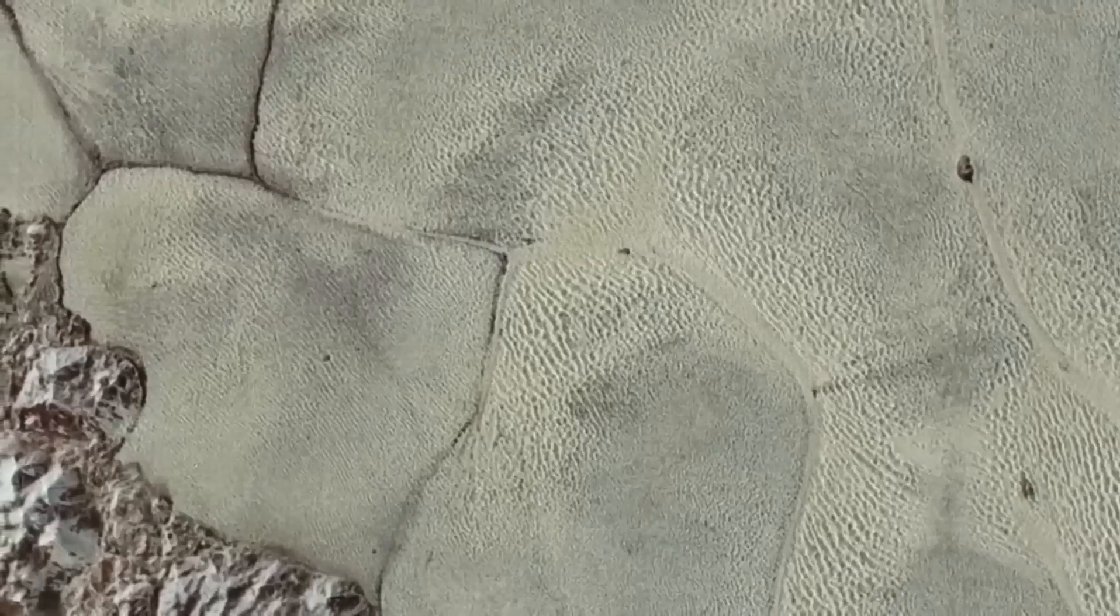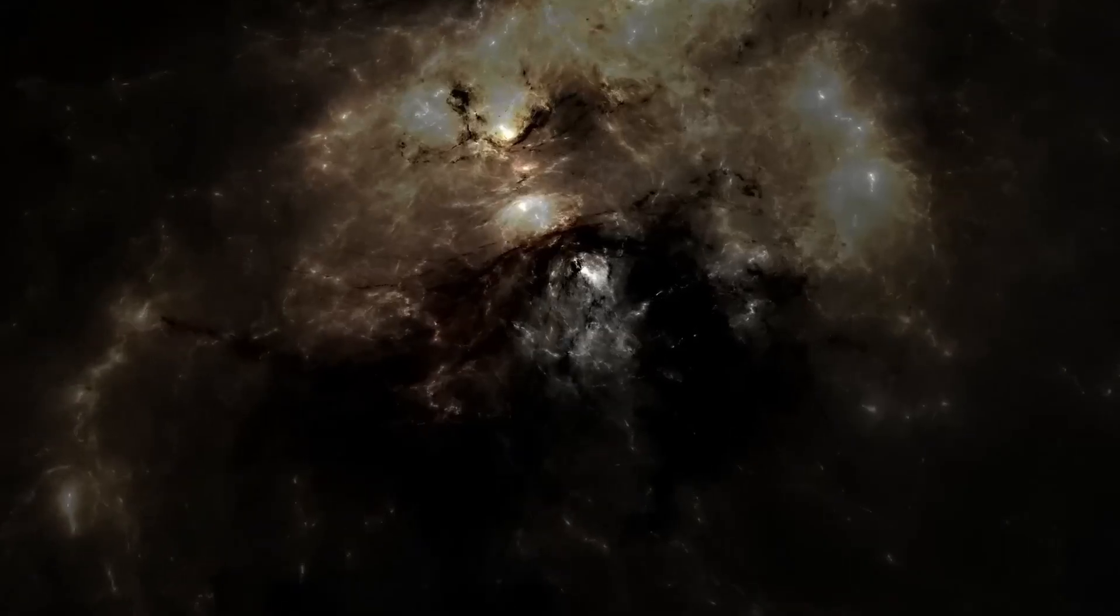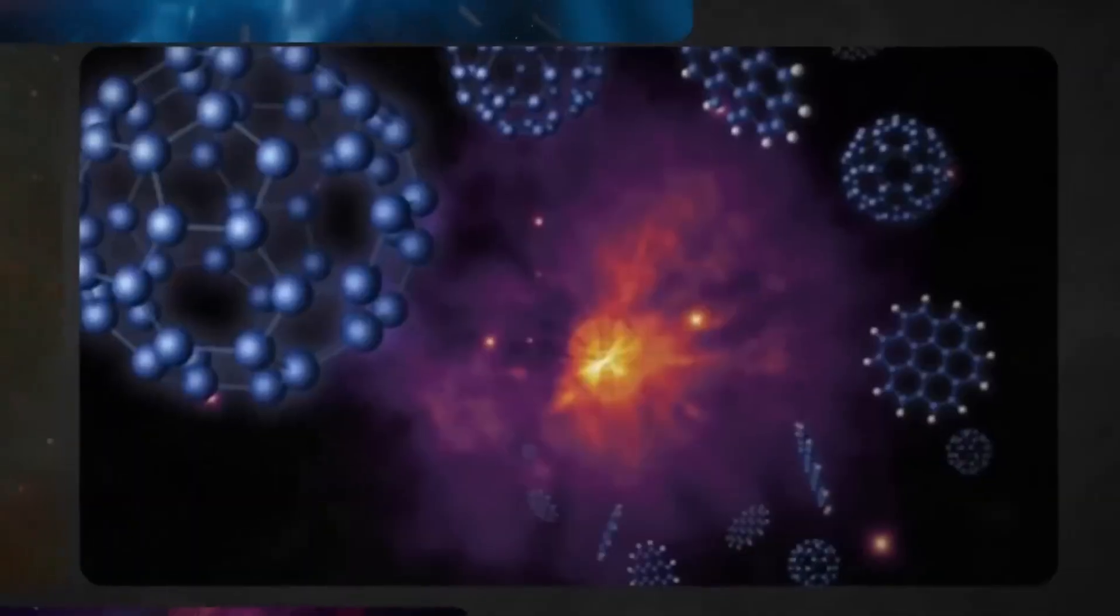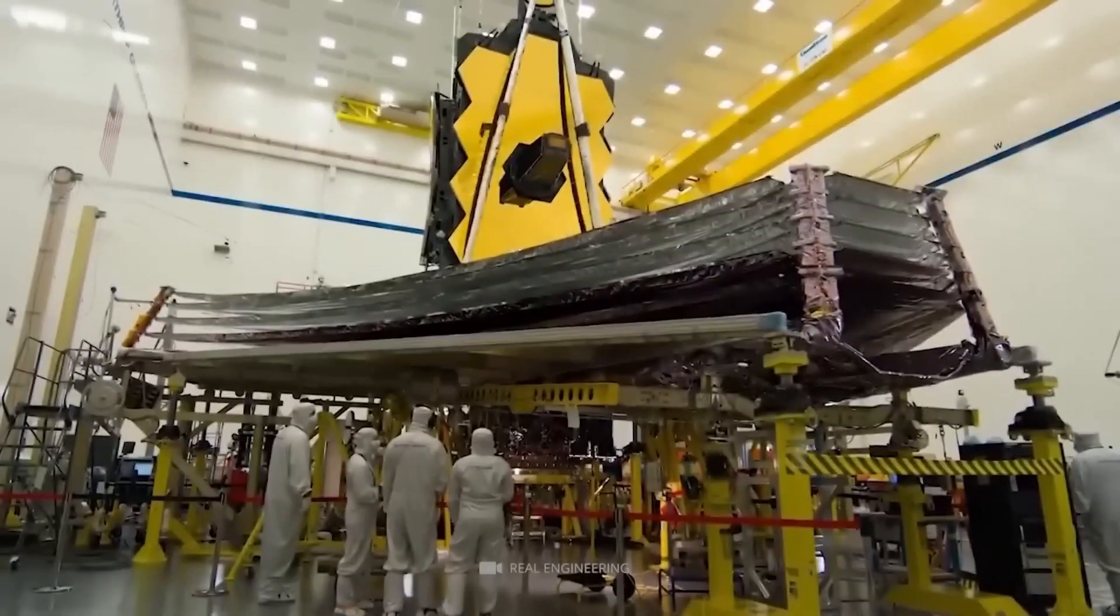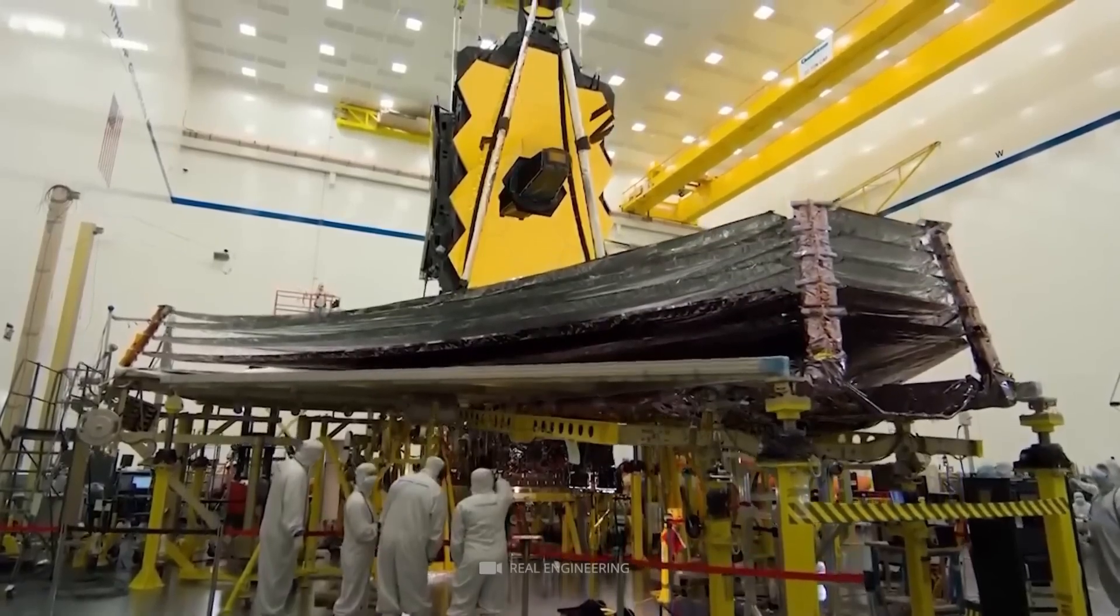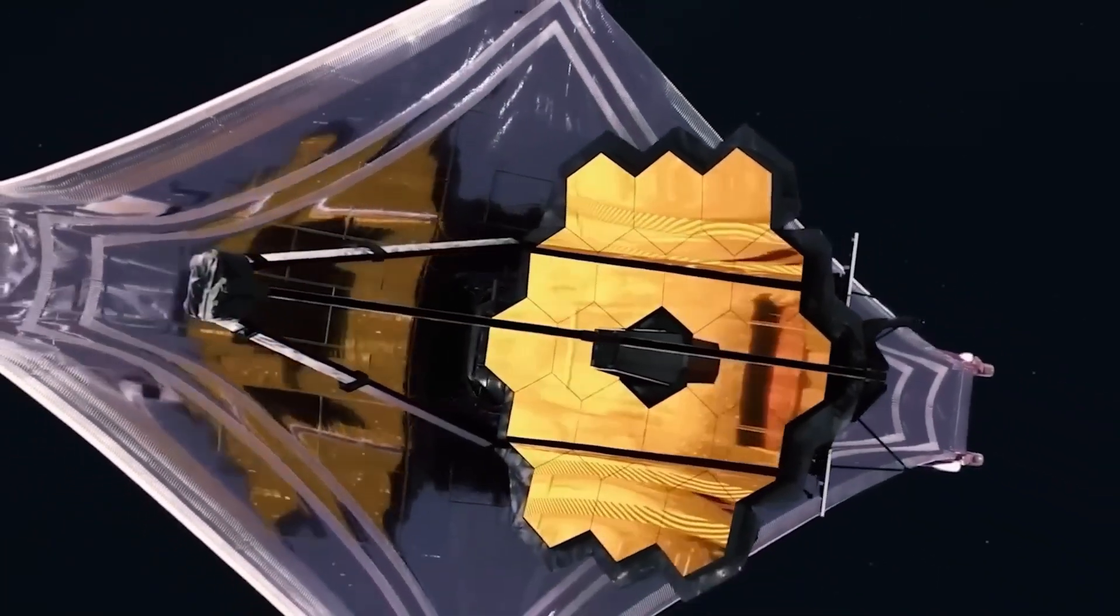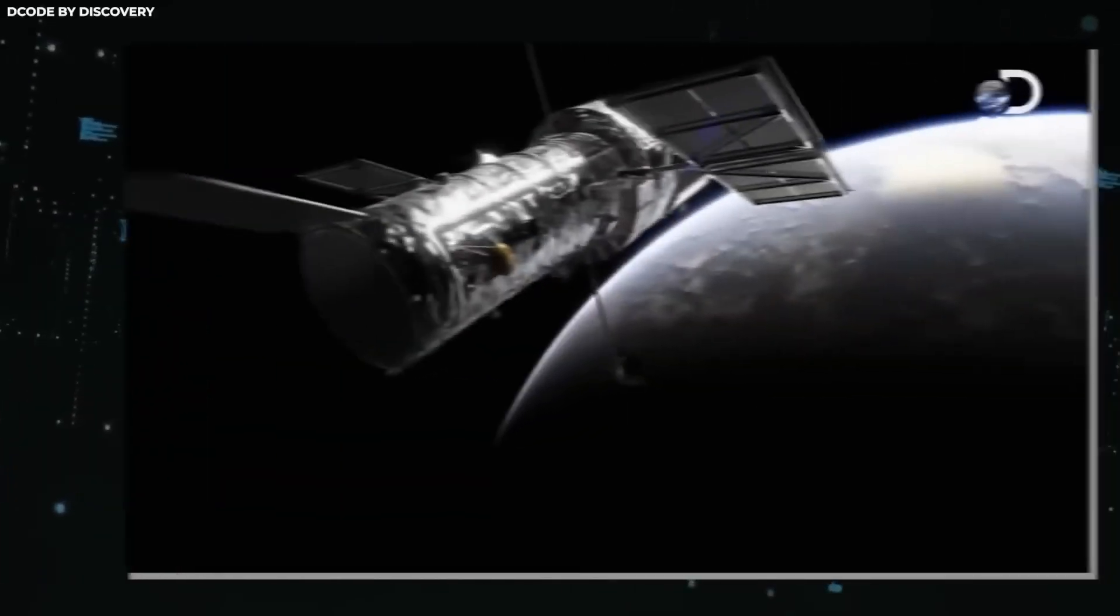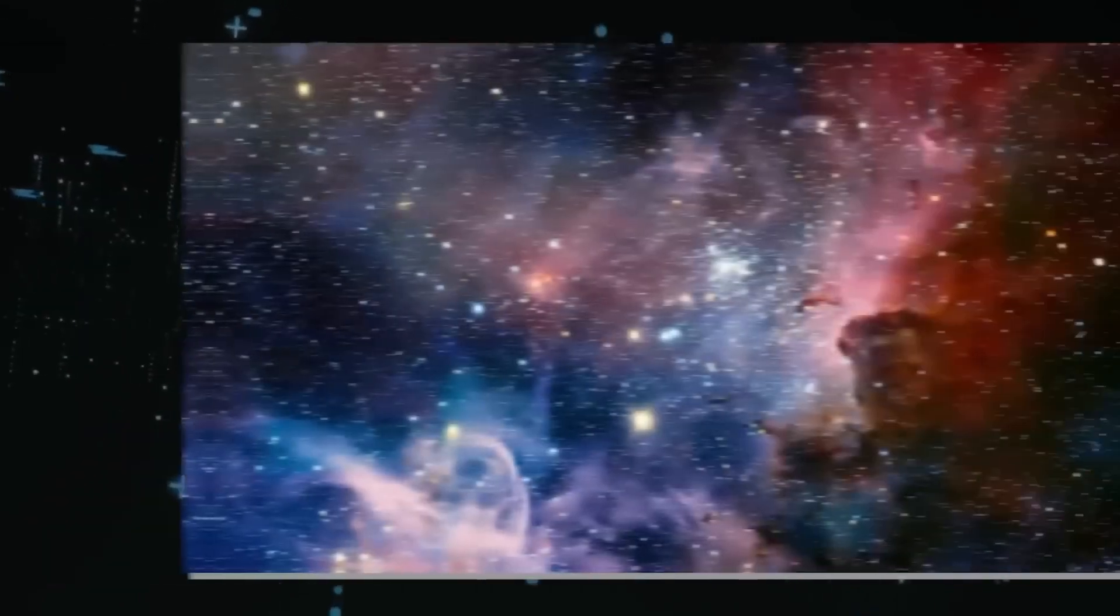The JWST's primary capability in detecting infrared wavelengths played a pivotal role in this discovery. Its highly sensitive instruments, particularly the near-infrared camera and mid-infrared instrument, enabled spectroscopic analysis, dissecting light to infer crucial information about exoplanetary atmospheres and their potential habitability. By studying the spectra of exoplanets as they transit their host stars, scientists can glean insights into their compositions, temperatures, and potential for life. This groundbreaking approach opens new avenues for exploring the cosmos and searching for signs of extraterrestrial life, positioning the JWST at the forefront of humanity's quest to unlock the mysteries of the universe.